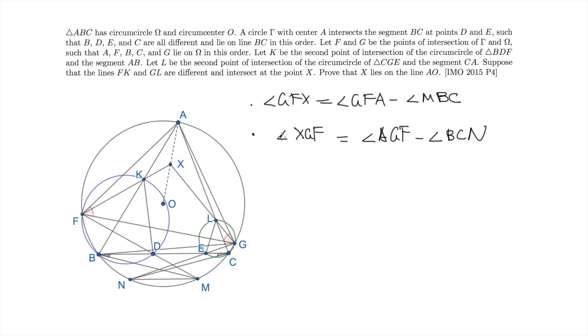Now we perform a similar angle tracing on XGF. We get that the angle XGF equals to AGF minus BCN. Then on one hand, we have AF equals to AG. This means that the angle GFA equals to the angle AGF. On the other hand, BC is parallel to MN, which implies that the angle MBC equals to the angle BCN. And this allows us to conclude because both angles are the difference between the red and the green angle.